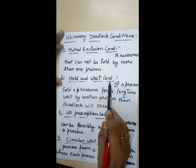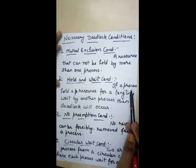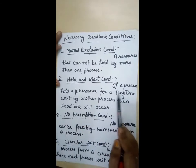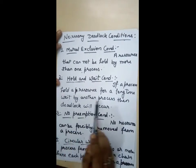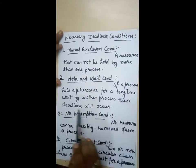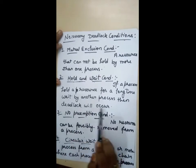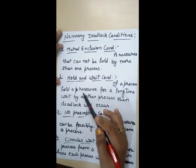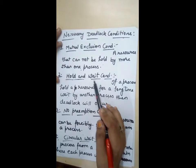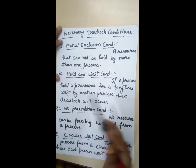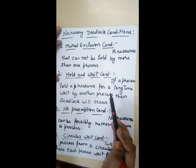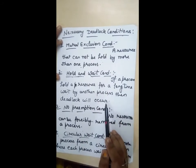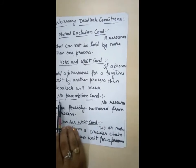The second condition is hold and wait. If a process holds a resource for a long time and waits for another resource, deadlock will occur. When a process already holds a resource but needs another resource and cannot get it, deadlock will occur.